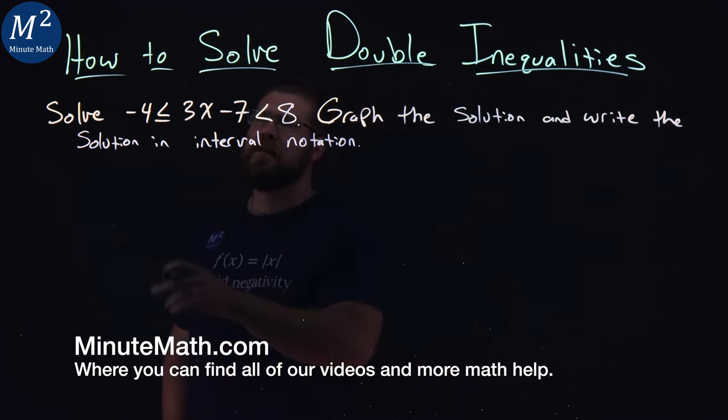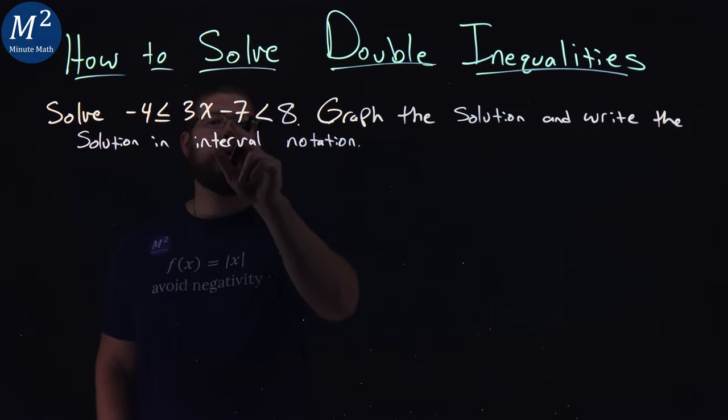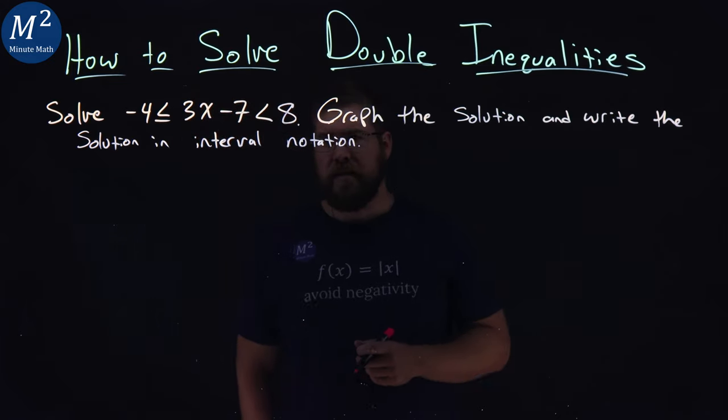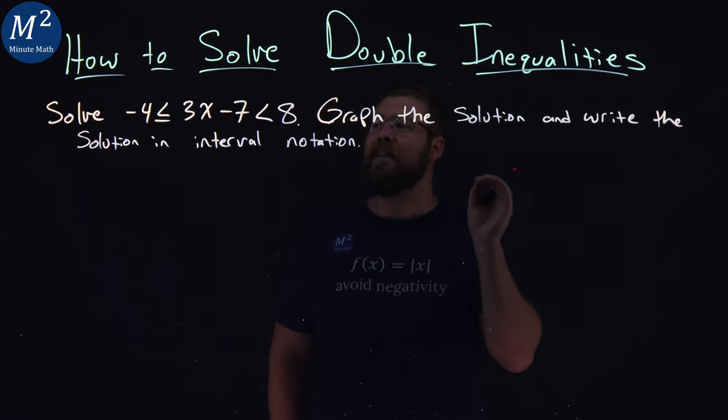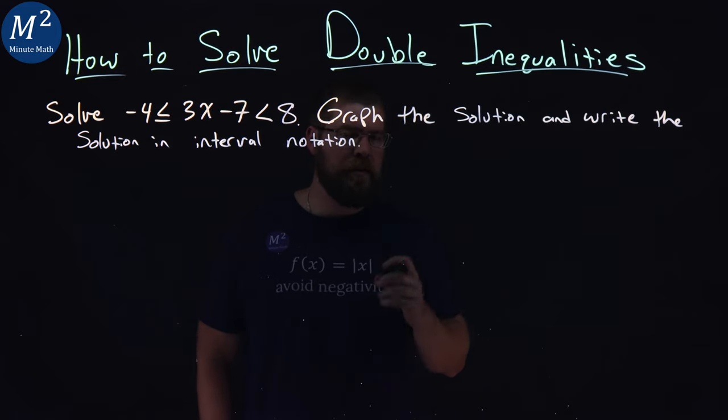Our problem here says solve negative four is less than or equal to three x minus seven which is less than eight. Graph the solution and write the solution in interval notation.